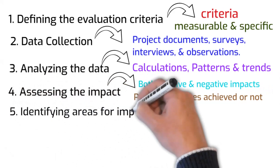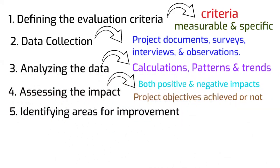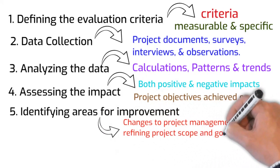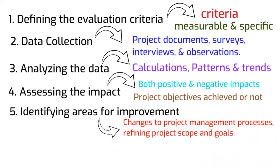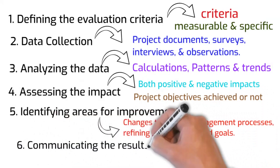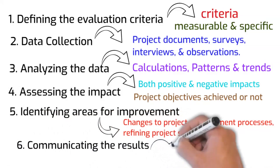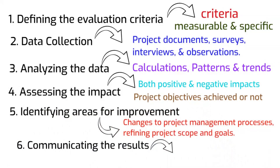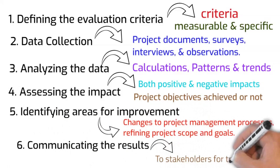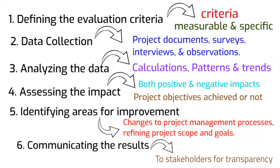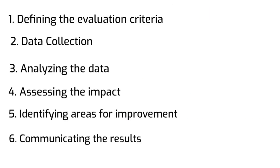Number five is identifying areas for improvement. Based on the analysis, we can identify areas where the project can be improved. This can include making changes to project management processes and refining the project's scope and goals. Number six is communicating the results. Finally, we have to communicate the results of the evaluation to stakeholders, which will help build trust and transparency and also provide insights for future projects.